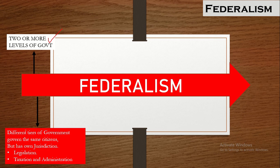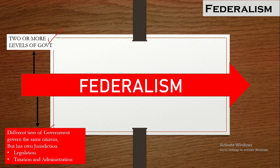The second key feature is that different tiers of governments govern the same citizens. The different levels of governments, either the central government or the state government, will have to govern and administer the same set of citizens. They are not ruling different parts of the country; they are ruling the same citizens on different areas of jurisdiction.